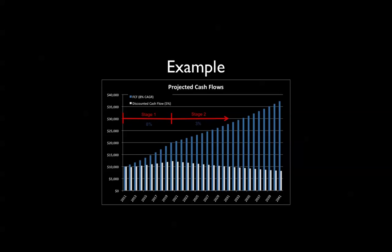Those are the blue bars representing free cash flow. In step two, we discount those free cash flows at a rate of 5%, represented by the white bars. The white bars are quite a bit less than the blue bars. They grow during the first 10 years, peaking at around $12,000, and after that, going out into the future, they never rise above that — in fact, they continuously shrink from that point.